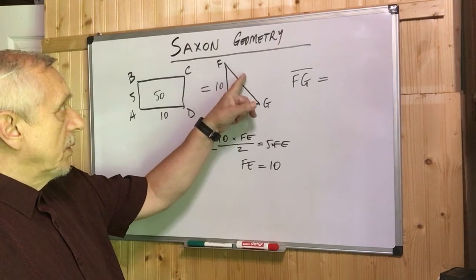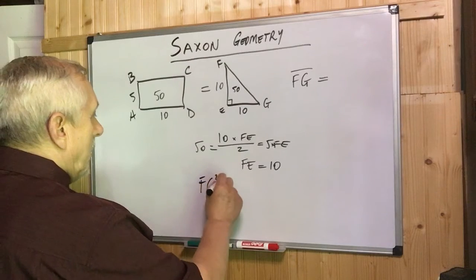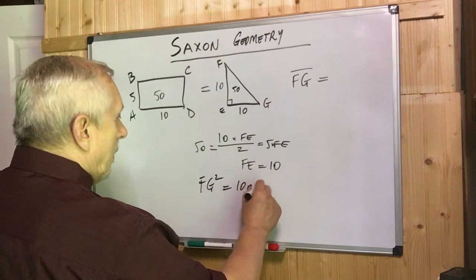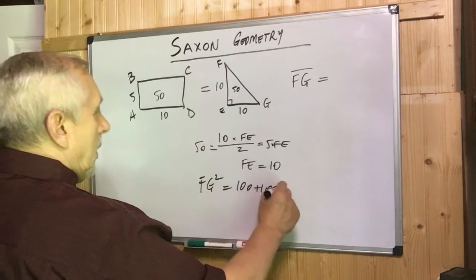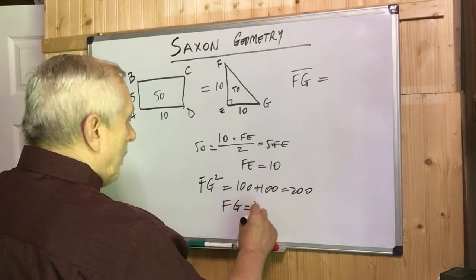10 squared plus 10 squared. So let's see, FG squared equals 100 plus 100 equals 200. So FG is square root of 200.